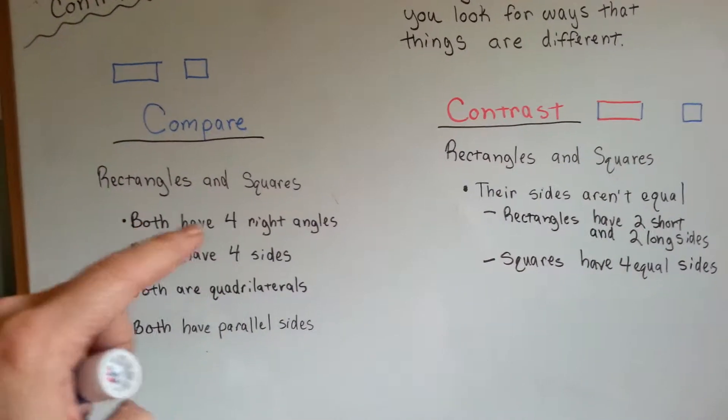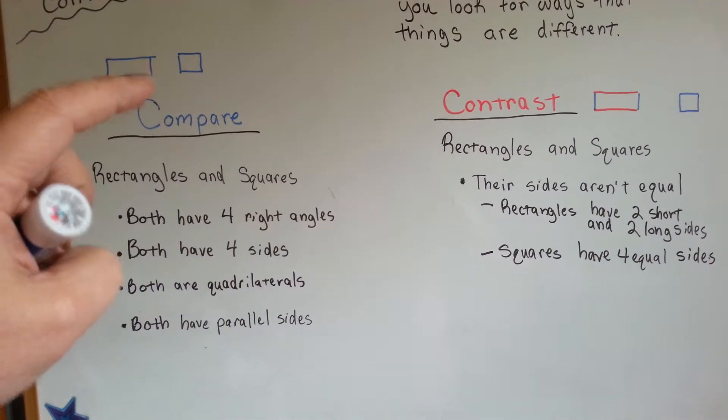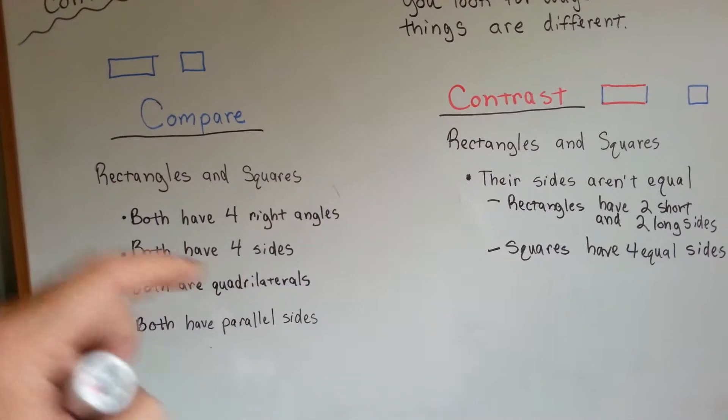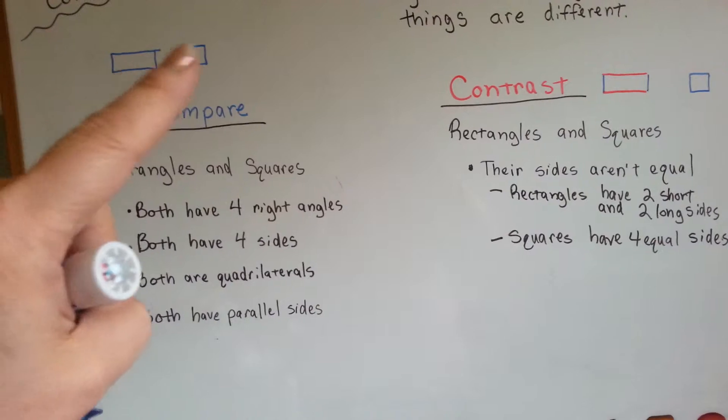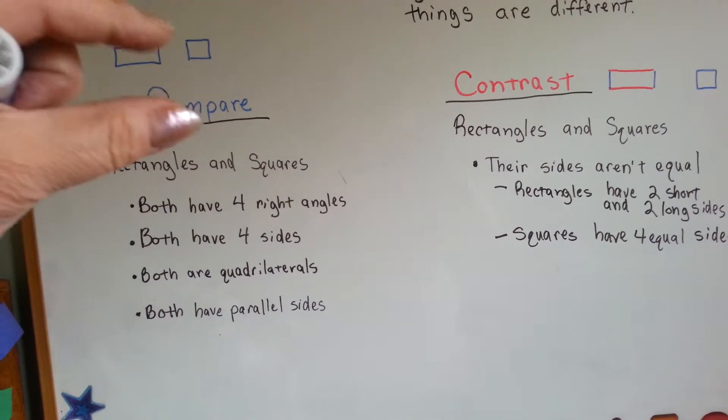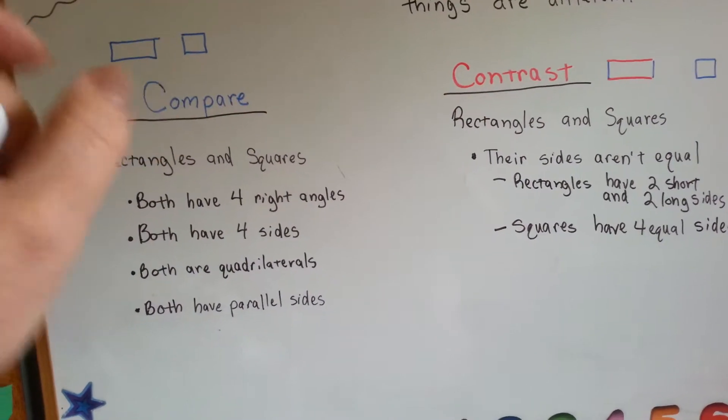Rectangles and squares both have four right angles. They both have four sides. They're both quadrilaterals, and they both have parallel sides. See?